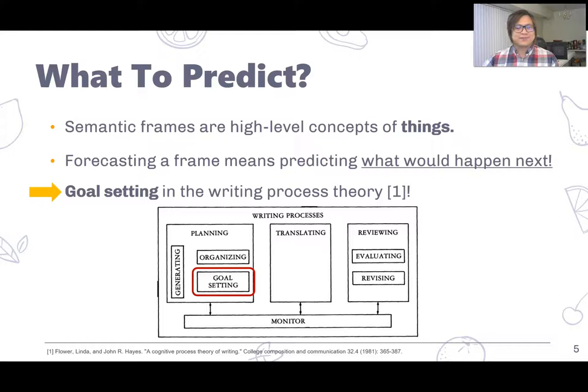So, what is a semantic frame? What does it mean to predict it? Semantic frames are high level concepts of things. That means when we try to predict a semantic frame in the next story block, we are predicting what will happen next in the story. In the writing process theory, it is very similar to goal setting, where we try to figure out what we would like to do or what we would like to make happen in the story.